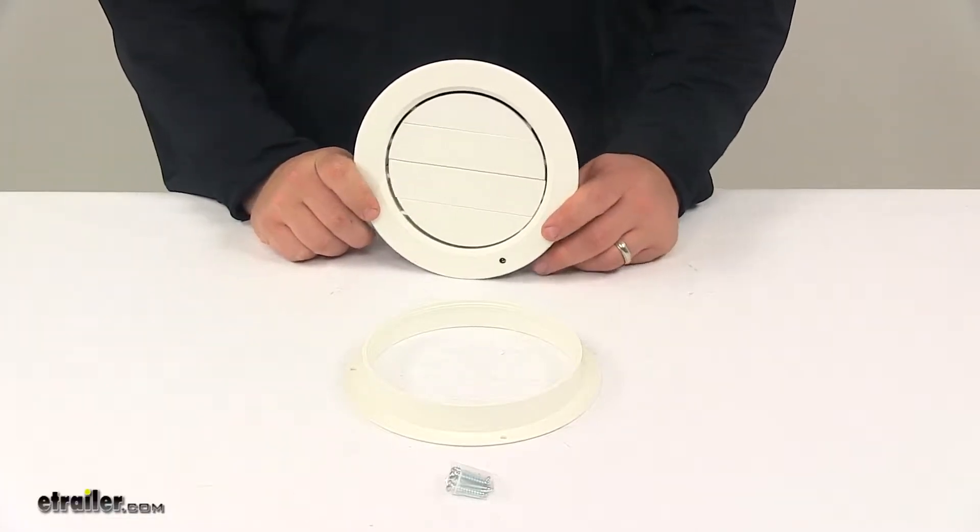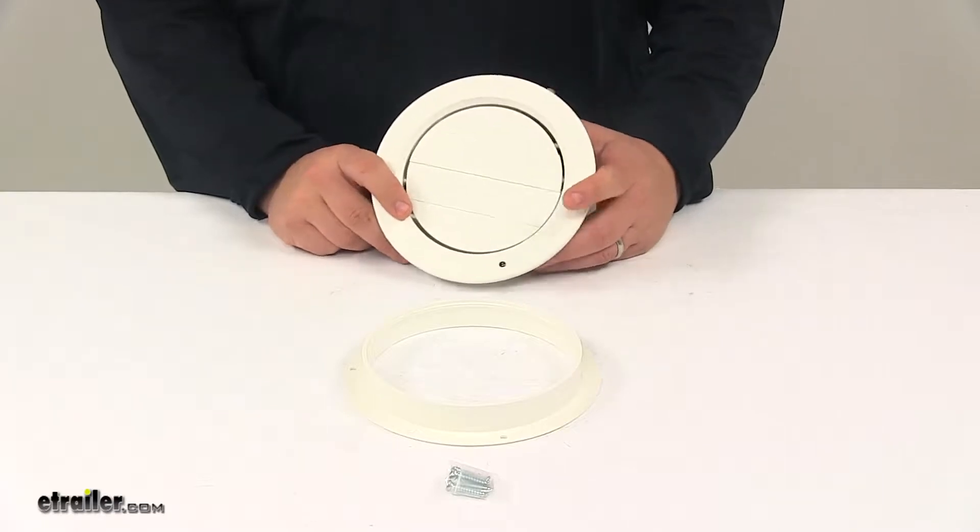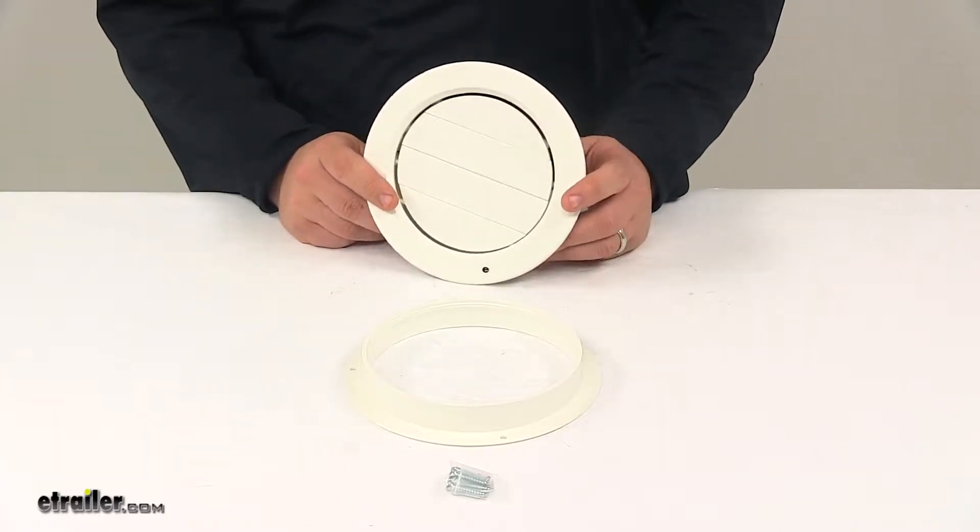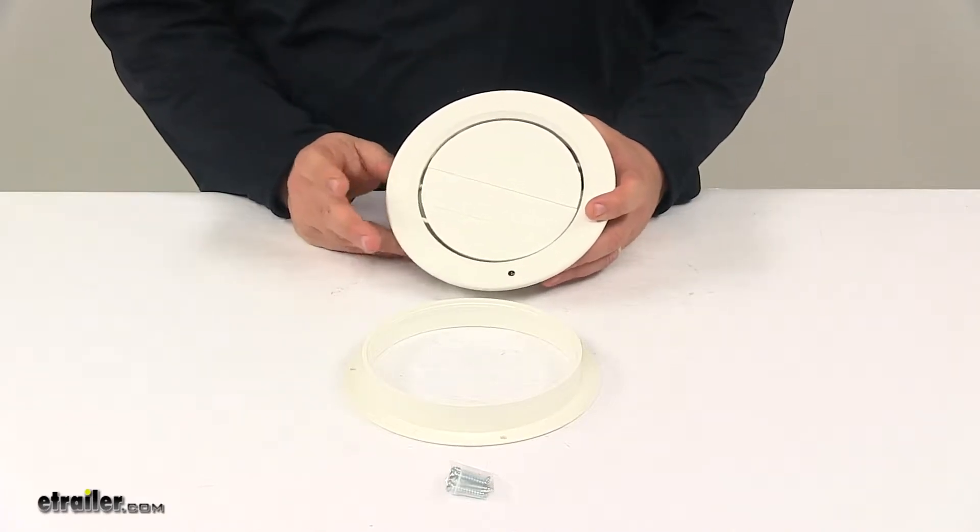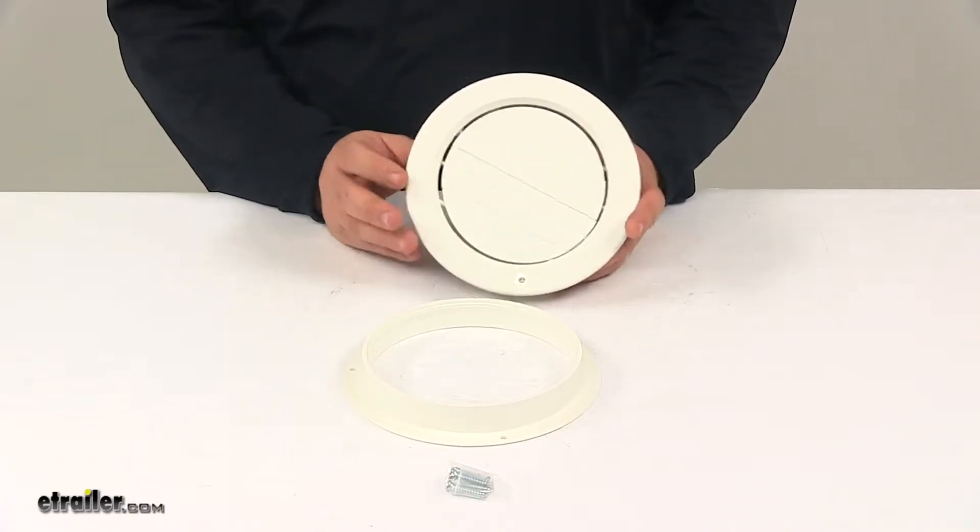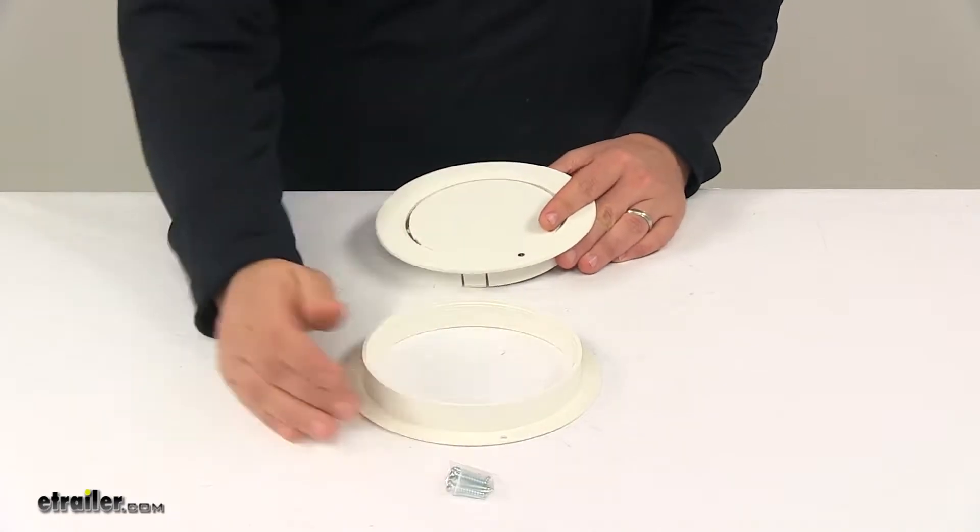Today we're taking a look at the Valterra adjustable heating and AC register. The ceiling vent is white in color and offers a nice clean look to the interior of your RV. It's made from durable plastic construction and comes with installation hardware.